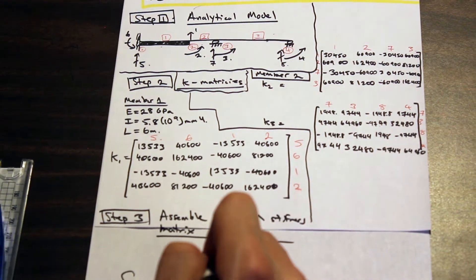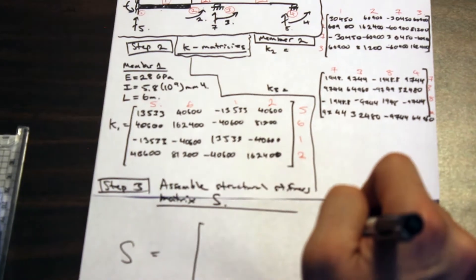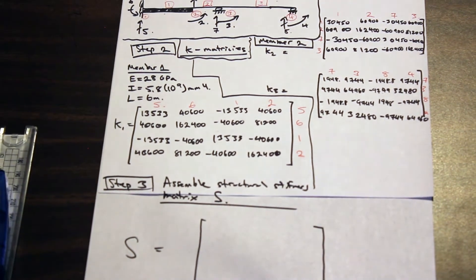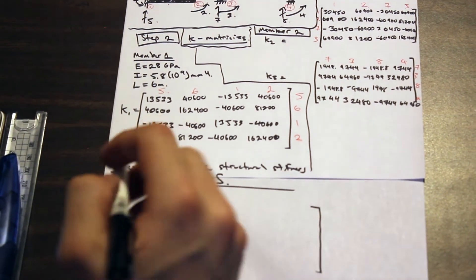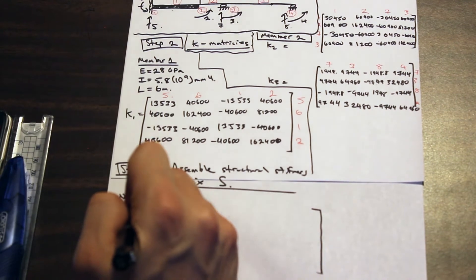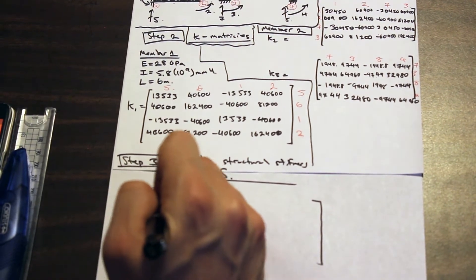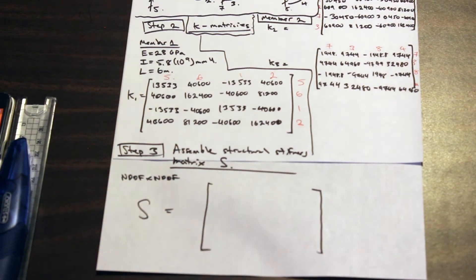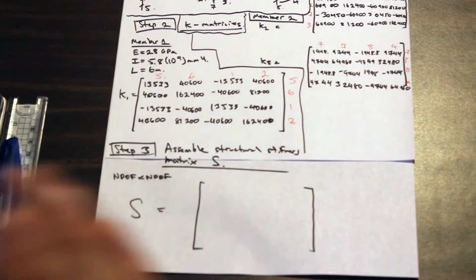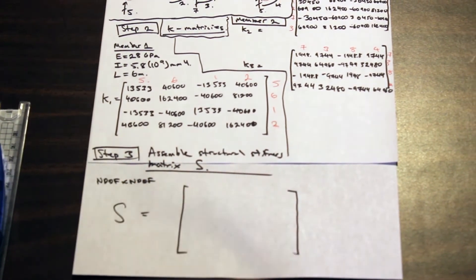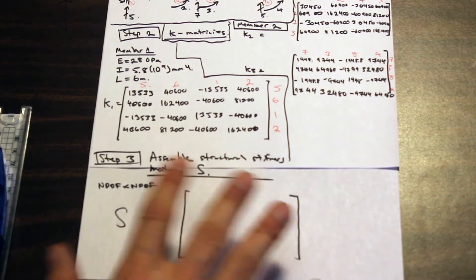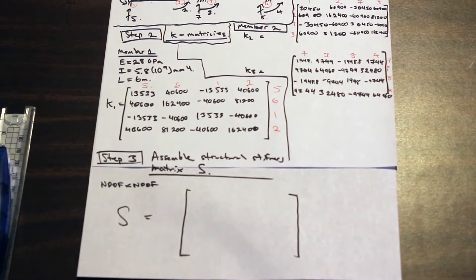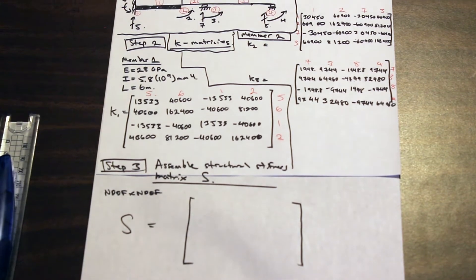We're going to assemble our structural stiffness matrix S. One thing to note is that the structural stiffness matrix always has dimension: number of degrees of freedom by number of degrees of freedom. It is also always symmetrical about the main diagonal. If either of those things aren't happening in your answer, you've made a mistake.